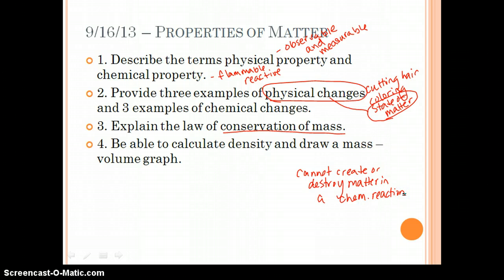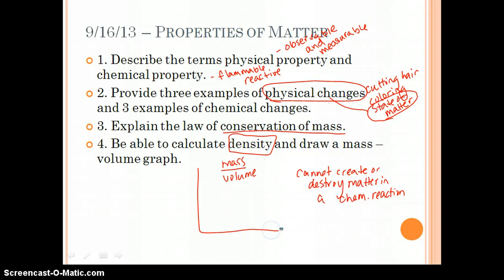And then density. Density is mass over volume. And we're going to do this in lab today. But be able to do this if it asked you a calculation or you looked at a graph. If you're looking at a graph of mass and volume, this line right here tells us density. And so the slope of this line is going to give us the density of that particular object.